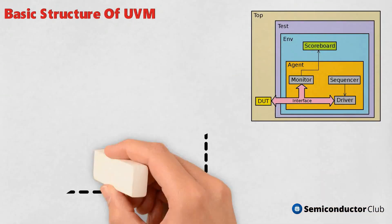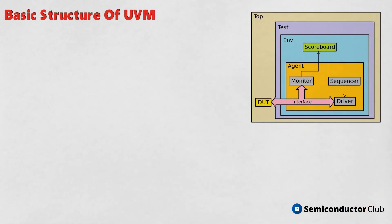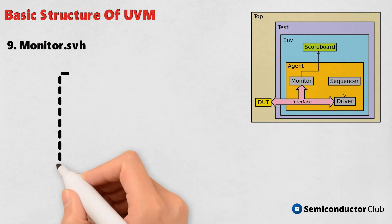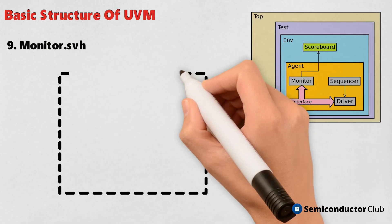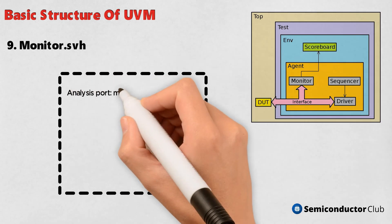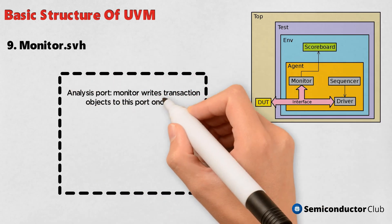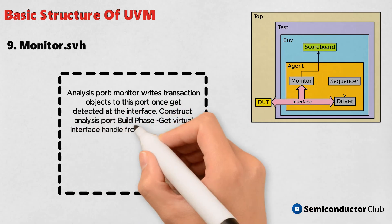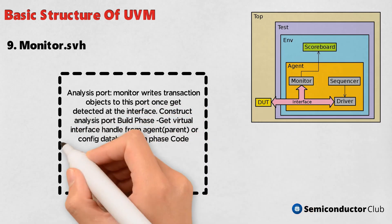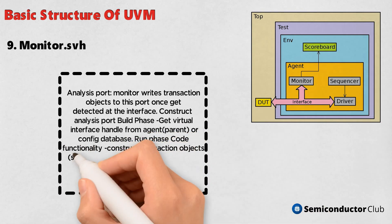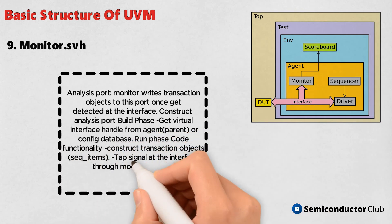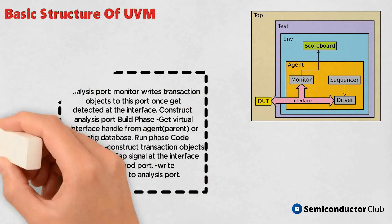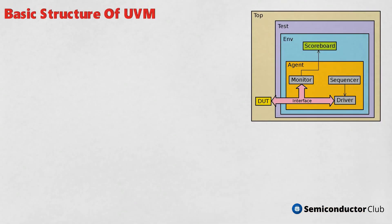9. Monitor.svh - Analysis port: monitor writes transaction objects to this port once detected at the interface. Config.svh: construct analysis port. Build phase: get virtual interface handle from agent, parent or config database. Run phase: code functionality, construct transaction objects (seq_items), tap signal at the interface through mod port, write transactions to analysis port.